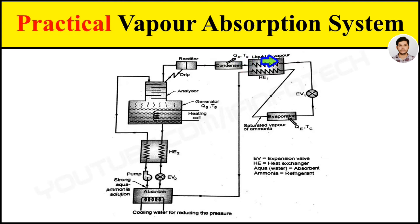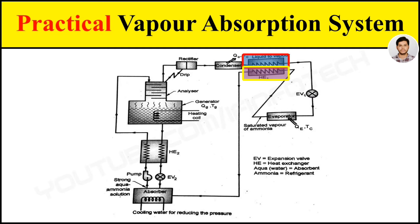This liquid ammonia is sent to the expansion valve through the first heat exchanger. The liquid refrigerant ammonia is sub-cooled by using low temperature ammonia vapor. This sub-cooled refrigerant is then passed through the expansion valve to the evaporator.